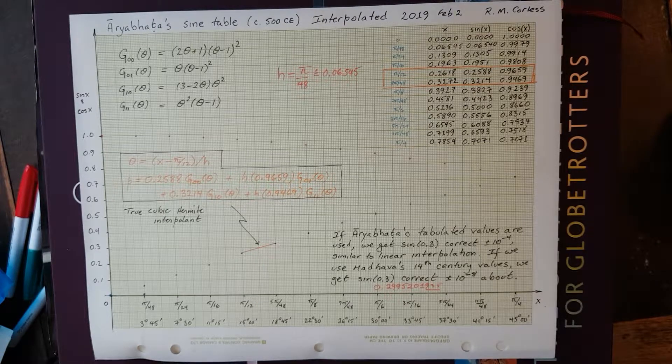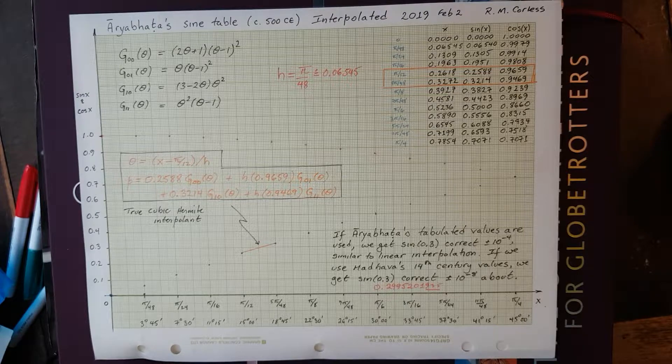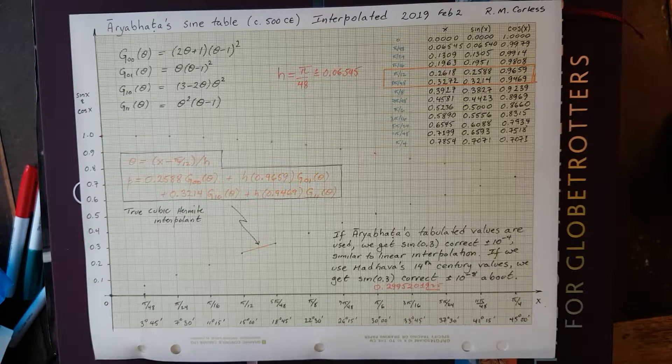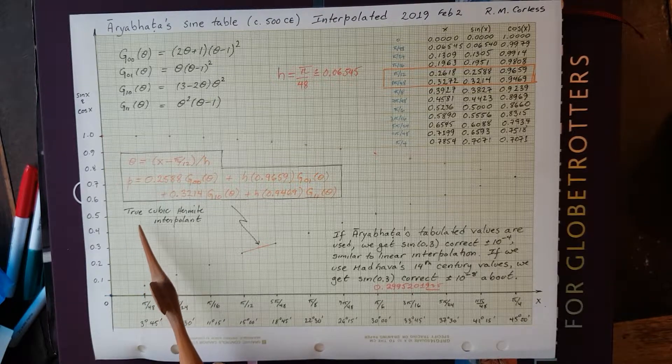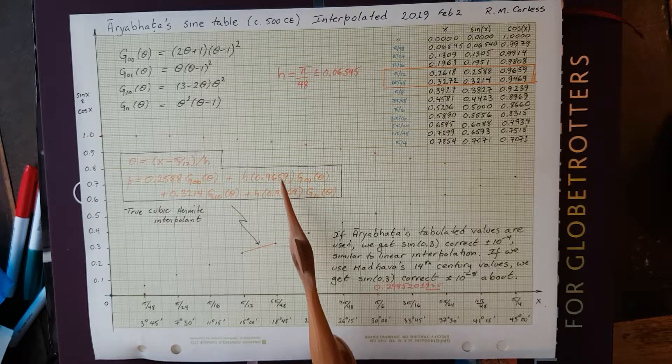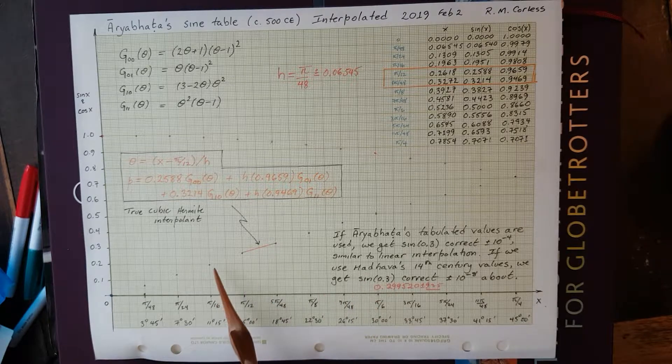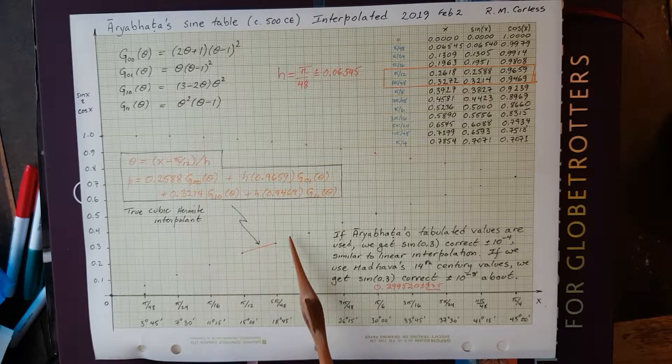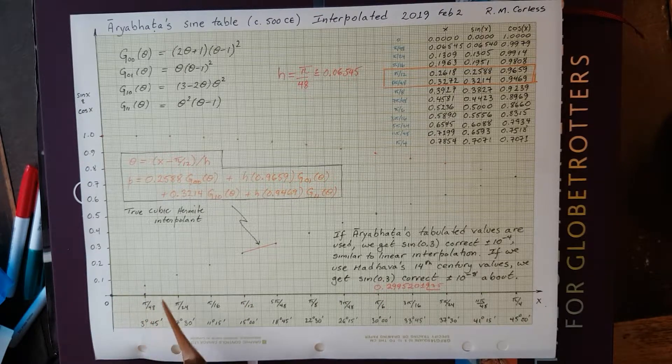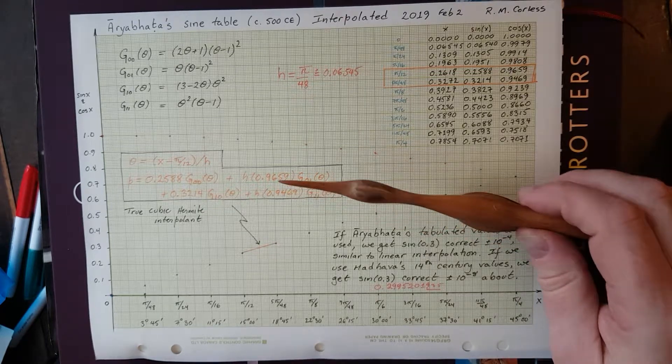So, there's the example of true cubic Hermite interpolation that I wanted to talk about. It has some historical interest, and I urge you to have a look at the Wikipedia entry of Aryabhata and Madhava. I'm going to talk a little bit about, in the next video, I'm going to talk a little bit about the error, and I'm going to talk about what happens when we don't use the exact derivatives of the underlying function, but we would rather use something else. But before I finish, I want to point out that there are different cubics in each piece, and this is a piecewise polynomial interpolant, and we don't have the problem of oscillations at the endpoints of the interval.